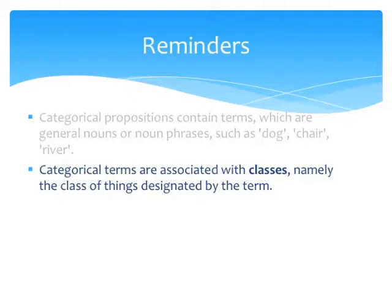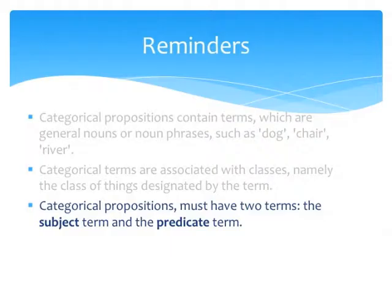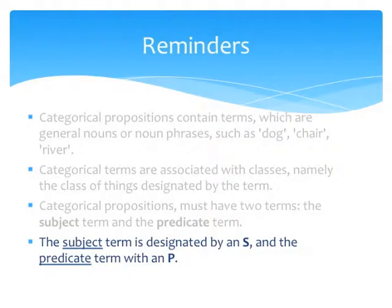In the case of chairs, the class of all chairs, and so on. Also, categorical propositions, which are the subject matter of categorical logic, must have two terms: the subject term and the predicate term. The general form of the categorical proposition is S is P. It is customary to designate the subject term with an S and the predicate term with a P.